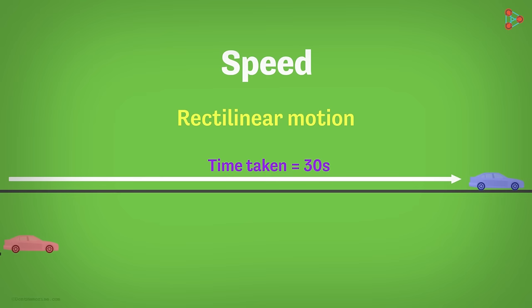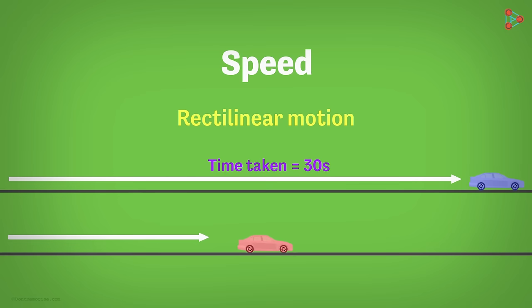Suppose the time it takes to reach the other side is 30 seconds. Now consider another car which is similar to the first one. It is also moving in a straight line path adjacent to the first one. The time taken by this red car to cover the same length of the road is 40 seconds.